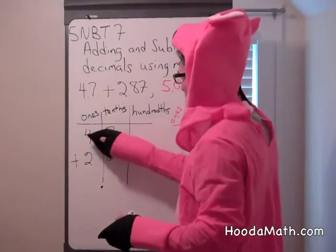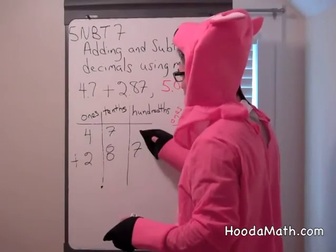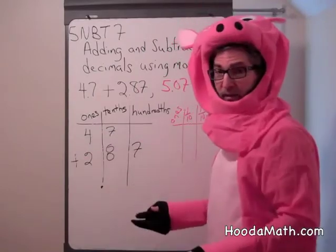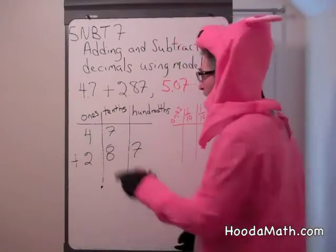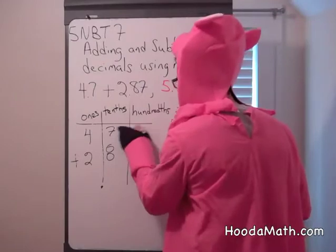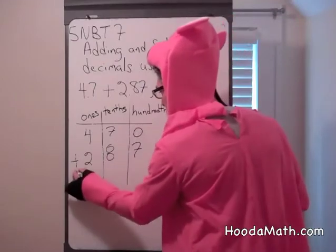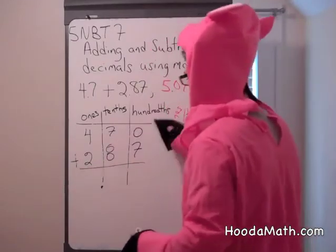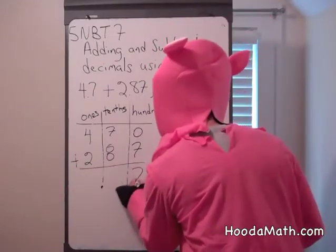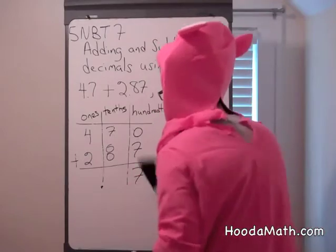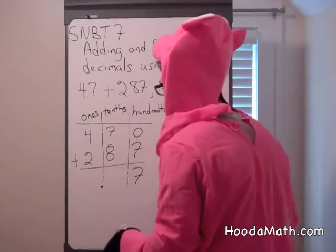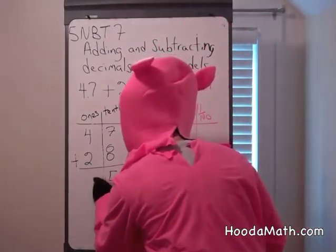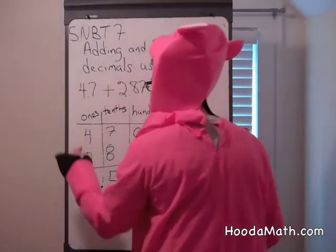How many hundredths does four and seven tenths have? None, symbolized by zero. Now we add. Zero and seven is seven. Seven and eight is fifteen, so we regroup.